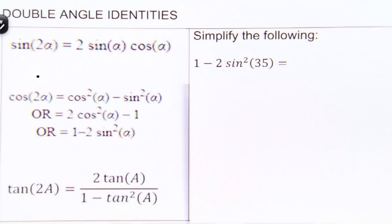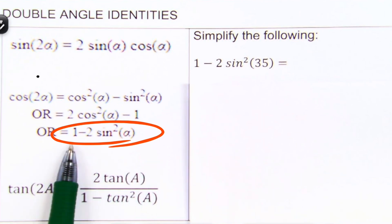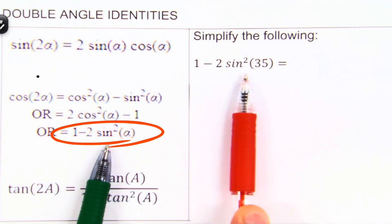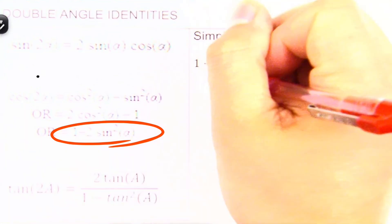We are given 1 minus 2 sine squared of 35. Now we look at the list of the double angle identities on the left. We can tell that this matches up with 1 minus 2 sine squared of A. We have 1 that matches up to 1 in the given problem, and then we have minus 2 sine squared of 35. That tells us that our A is actually equal to 35.